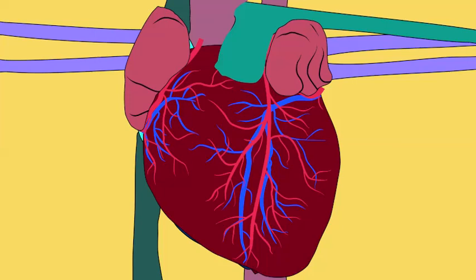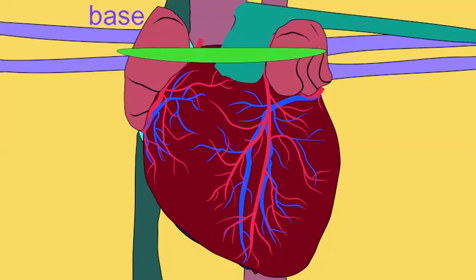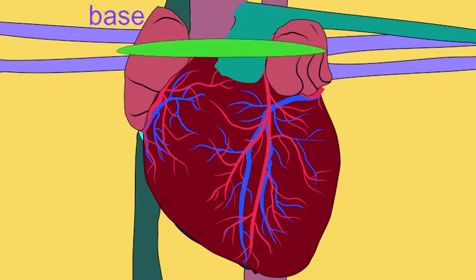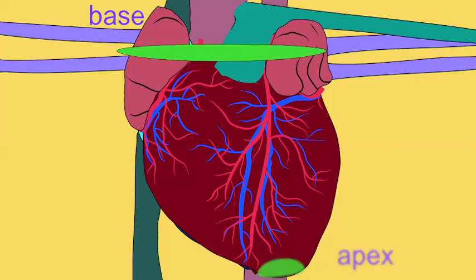The human heart rests in the thoracic cavity and is roughly the shape of an inverted triangle, with the base of the heart near the second intercostal space and the apex of the heart near the fifth intercostal space, a couple of inches to the left of the midline.